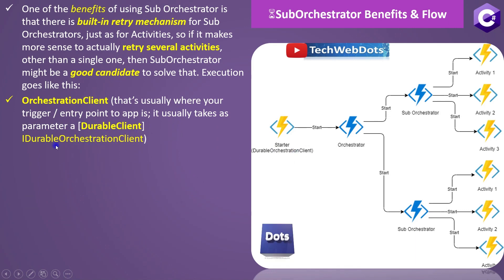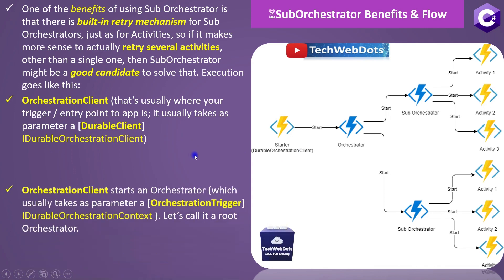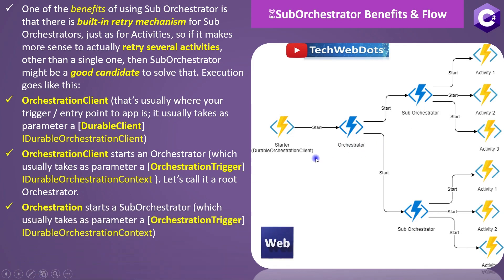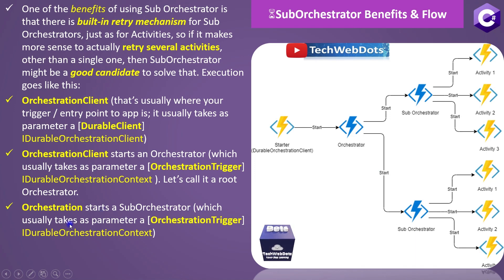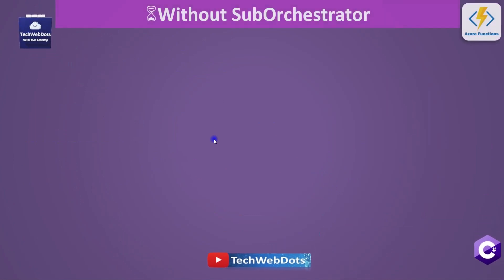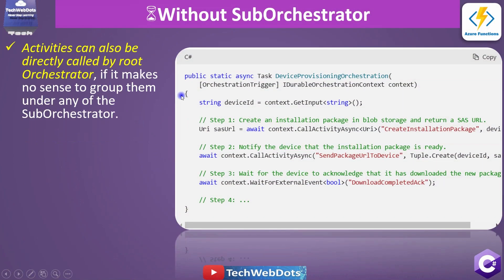Regarding the execution flow: when we talk about the start durable orchestration client, it is a durable client which receives IDurableOrchestrationClient. When we talk about the orchestrator, it receives IDurableOrchestrationContext. The sub orchestrator also receives IDurableOrchestrationContext and usually takes parameters. At the end, the sub orchestrator calls specific activities which use IDurableActivityContext.